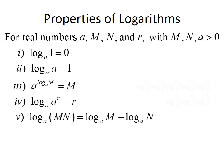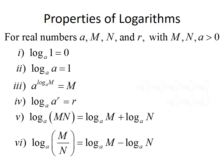Fifth, we have a product property. If you take a logarithm of the product M times N, we can split that up using two logarithms: log base A of M·N equals log base A of M plus log base A of N. Sixth, we have a quotient property: log base A of M divided by N equals log base A of M minus log base A of N. And finally, we have a power rule: log base A of M raised to the R power can be rewritten by bringing the power out to the front, giving R times log base A of M.